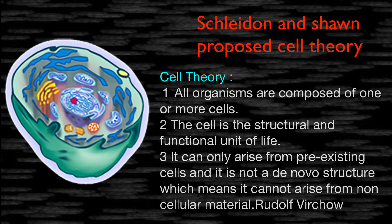The cell theory states: Point number one — all organisms are composed of one or more cells. Any living organism you see on the planet is composed of cells; it can be one cell or more than one. Point number two — the cell is the structural and functional unit of life, meaning both structure and function are formed by the cell.